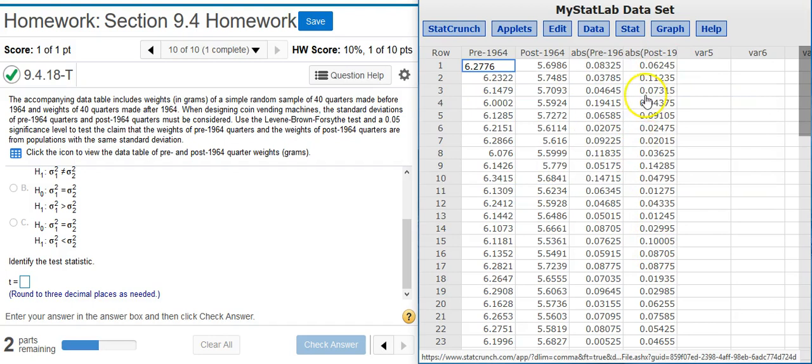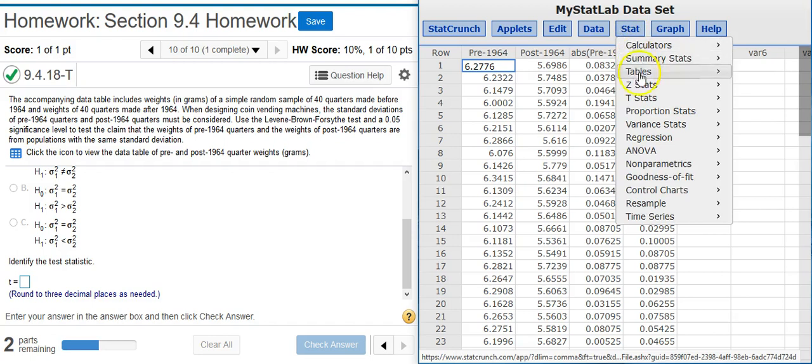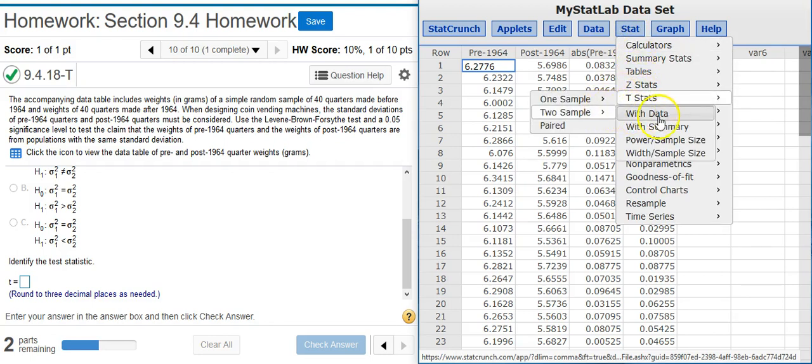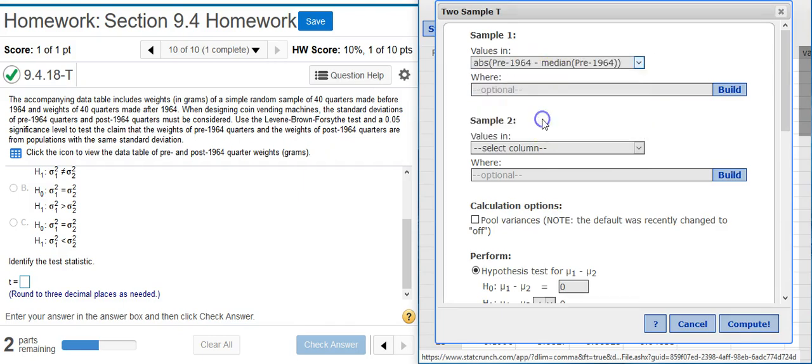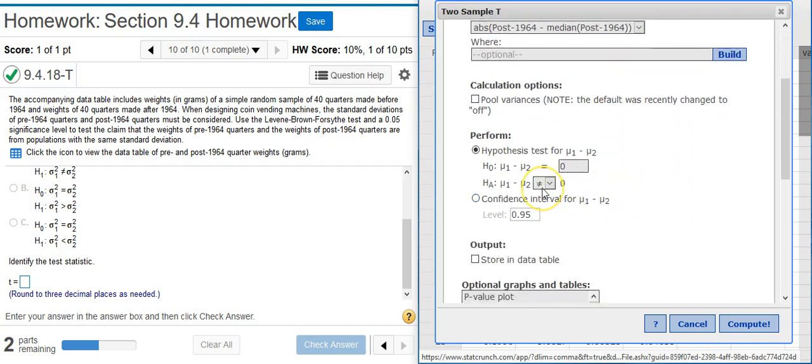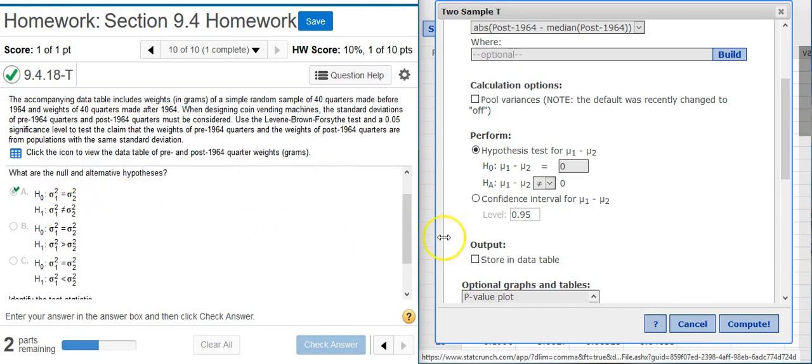Now I'm going to take these two columns of transformed data, and I'm going to perform an independent t-test. To do that, I go to Stat, T Stats, 2 Sample, with data because I have actual data there in StatCrunch. The first column of transformed data is my first sample. The second is the second. And we want to make sure that this inequality sign matches the one from our alternative hypothesis. And we see that it does match. So now we're all set. I hit Compute.